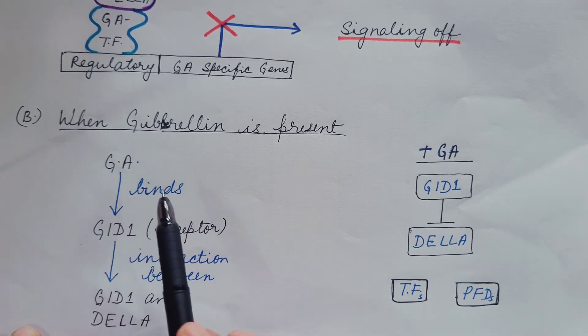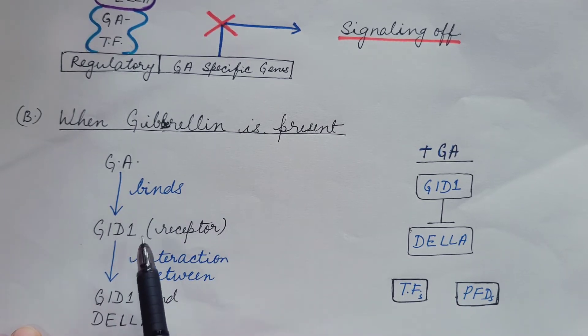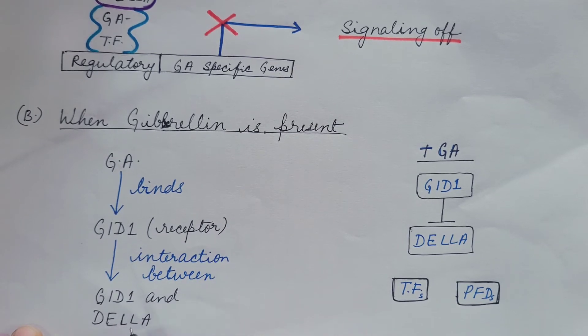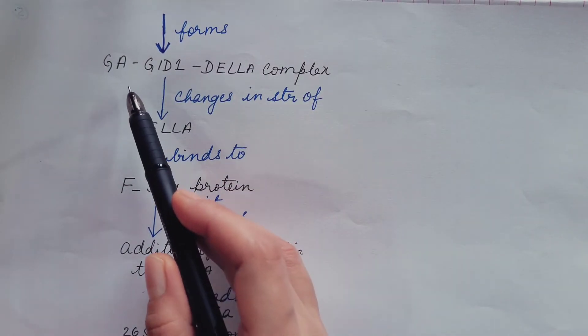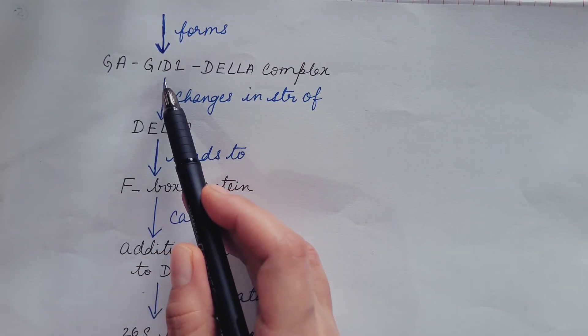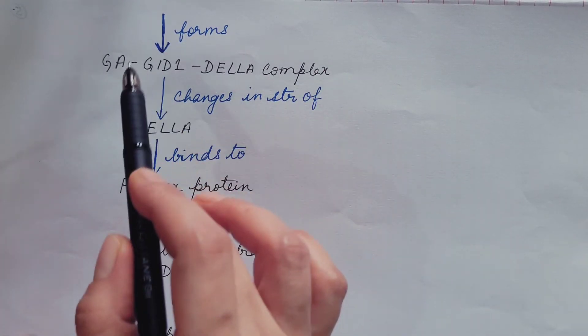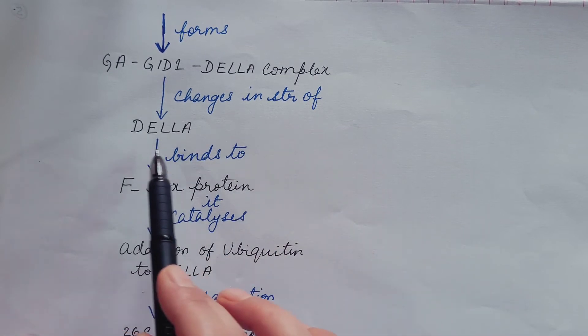Gibberellin binds with GID1, the receptor. This binding results in the interaction between GID1 and DELLA protein. Hence, it forms GA-GID1-DELLA complex and this complex formation results in changes in structure of DELLA protein.